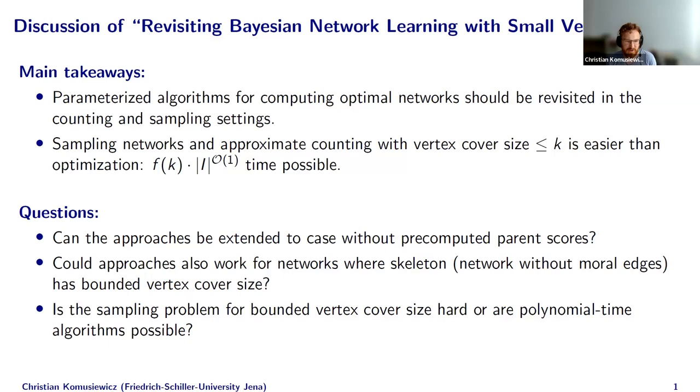My questions for extending this work are the following. The first is the paper deals with the setting where you have all the potential parent scores with parent sets with non-zero scores are given in advance. So we have pre-computed some parent scores. I would be interested in whether you think that the algorithms can be adapted for this. The next question, you kind of hinted at this already, that we would like to increase the set of networks for which we can get positive results. I would particularly be interested in whether or not you can do it for vertex cover size for the graph where the skeleton only has bounded vertex cover size. This is the network where we don't add these moral edges, which kind of make a big restriction.